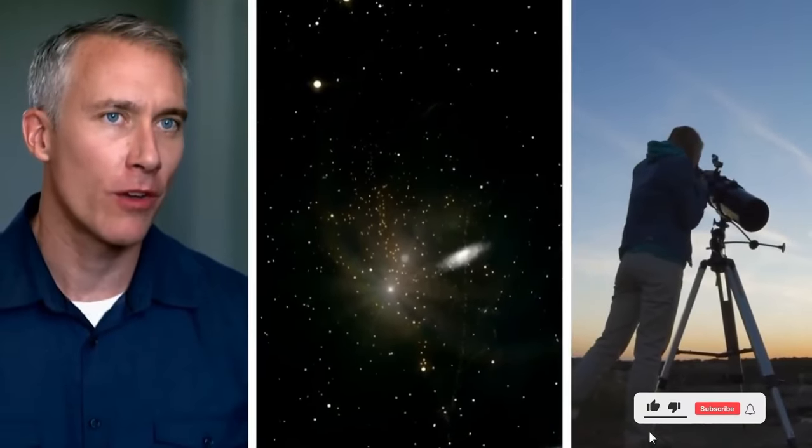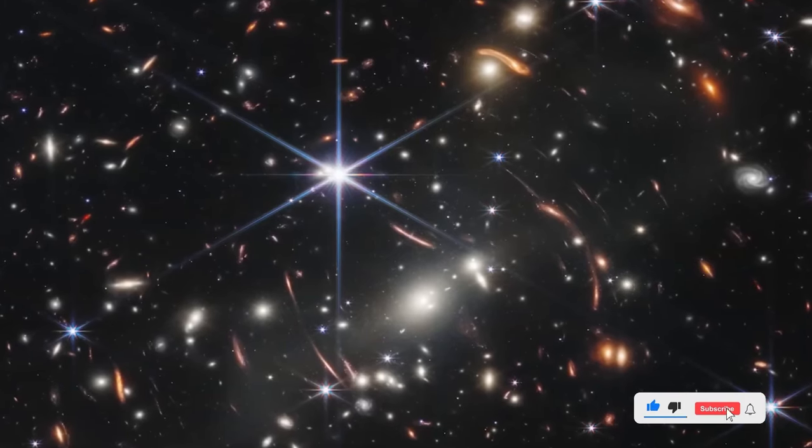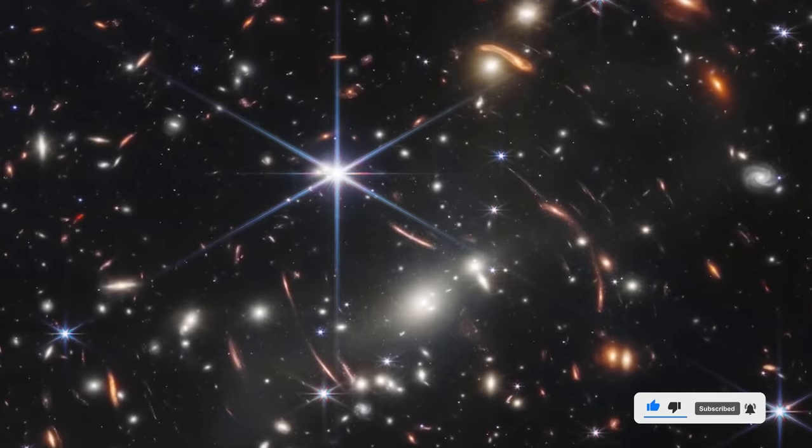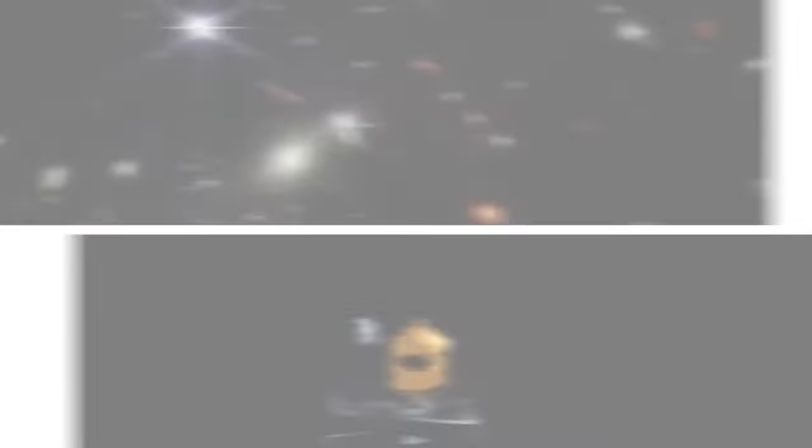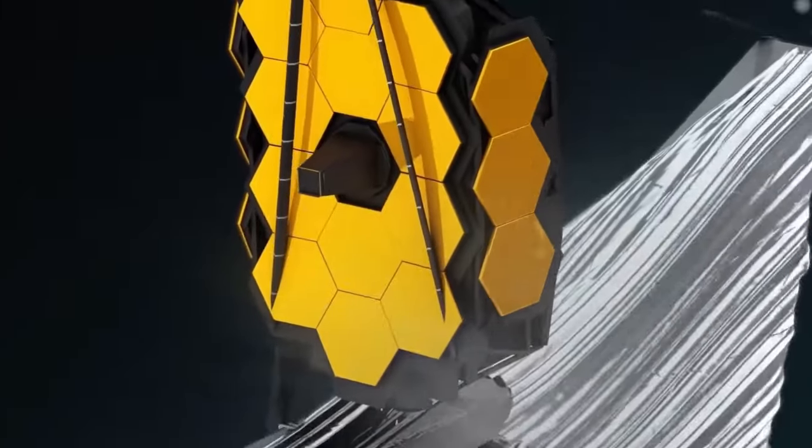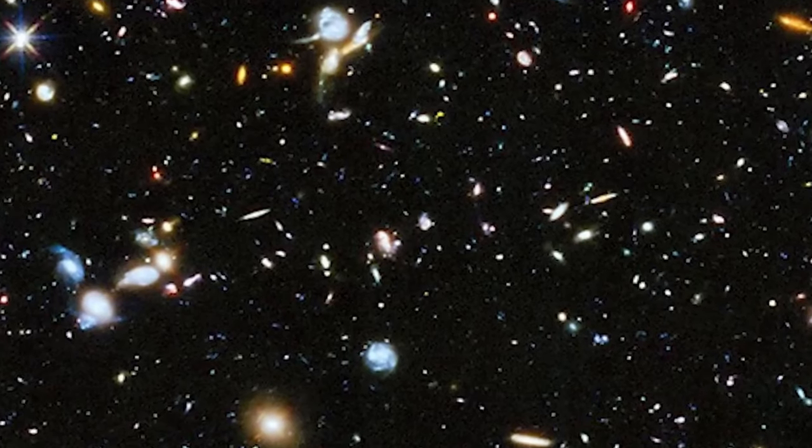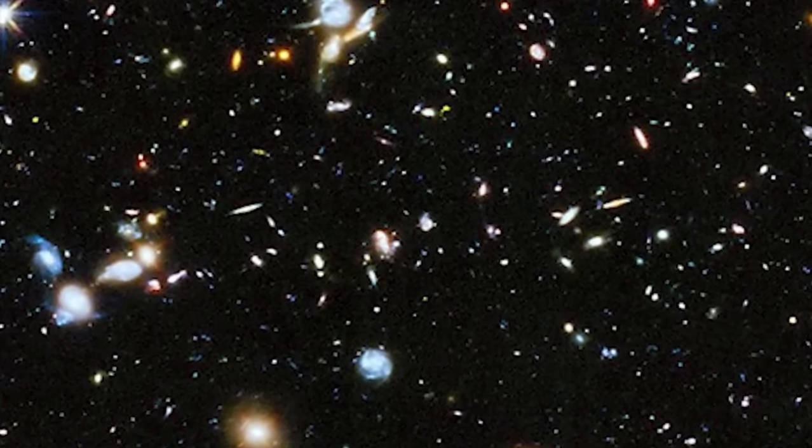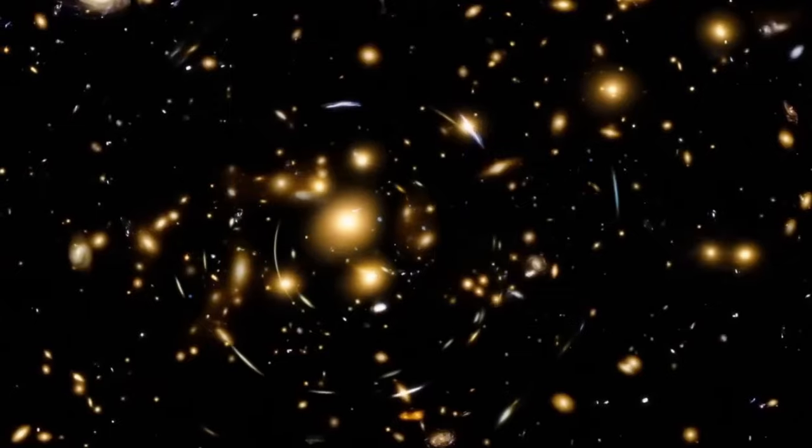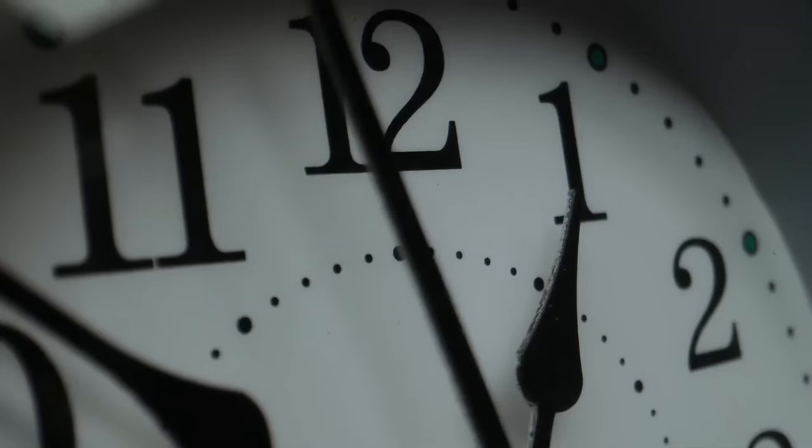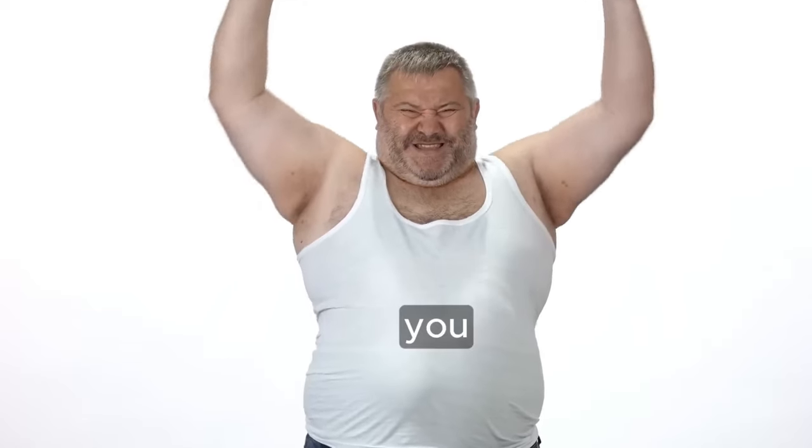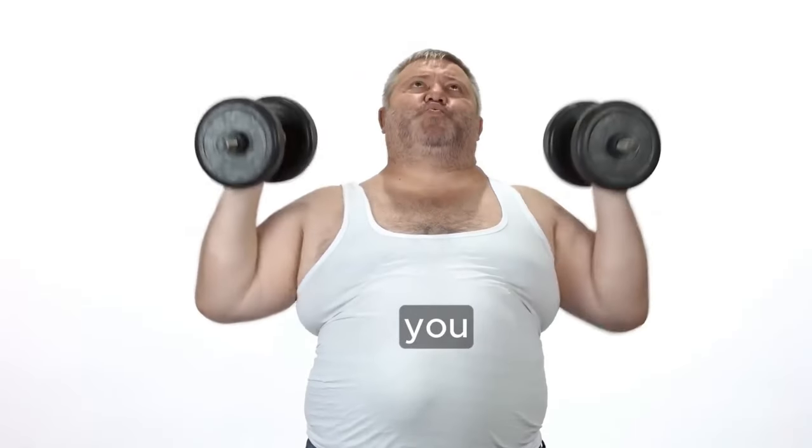But that's not what the JWST has observed. Instead, it reveals galaxies that are smooth and neat, resembling the ones nearby. There's a lack of any visible damage or collisions among these galaxies. One study called PANIC points out that there are 10 times more of these clean spiral galaxies than theorists had predicted. This discovery is like finding a busy highway with fast-moving cars, but no accidents.